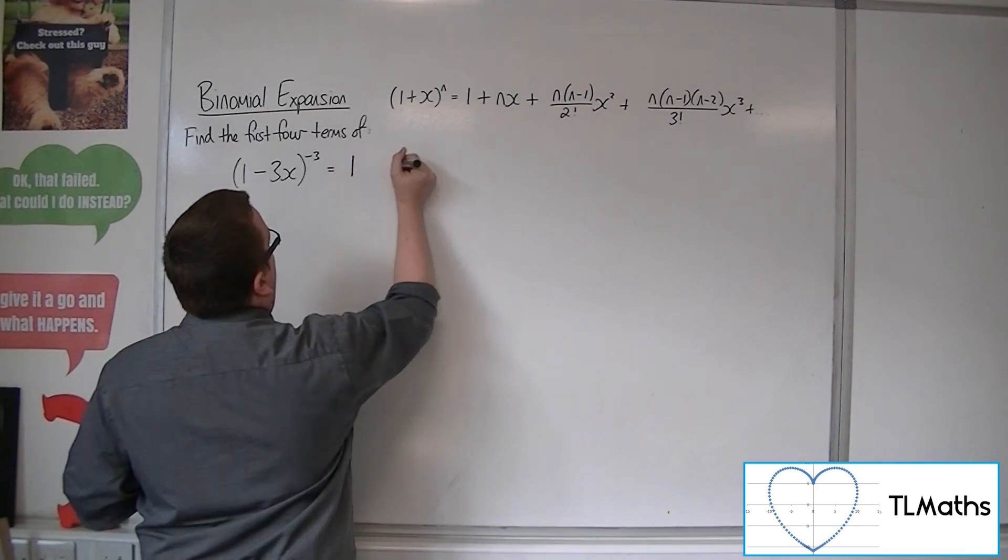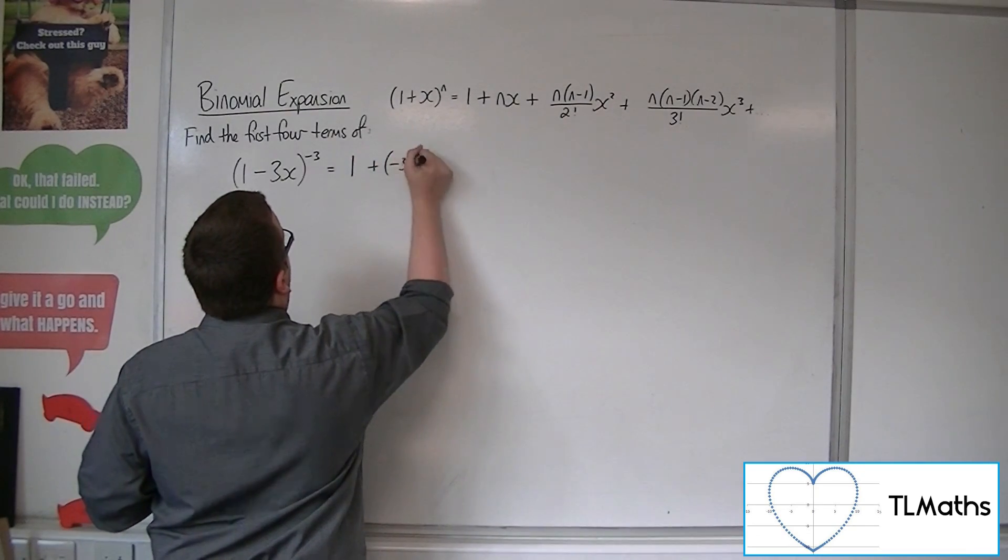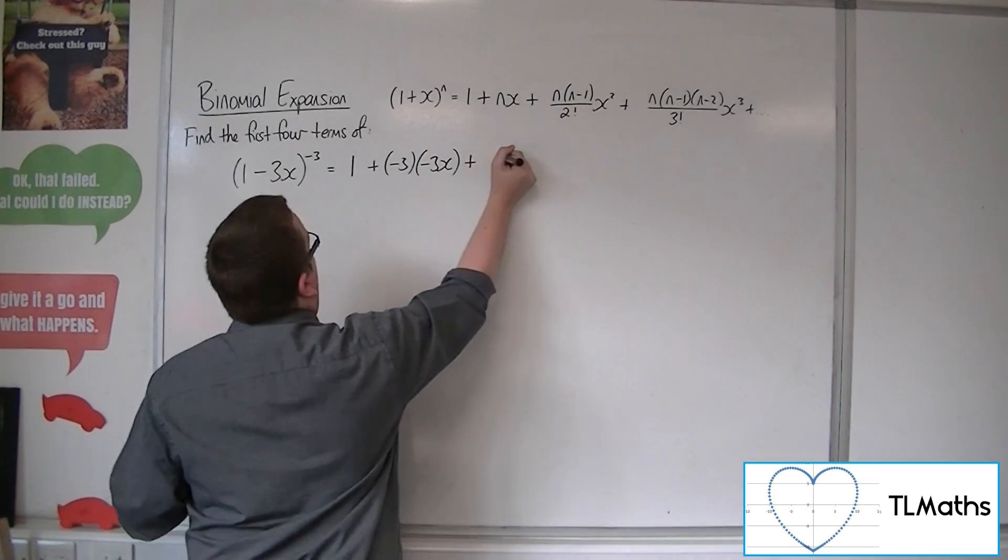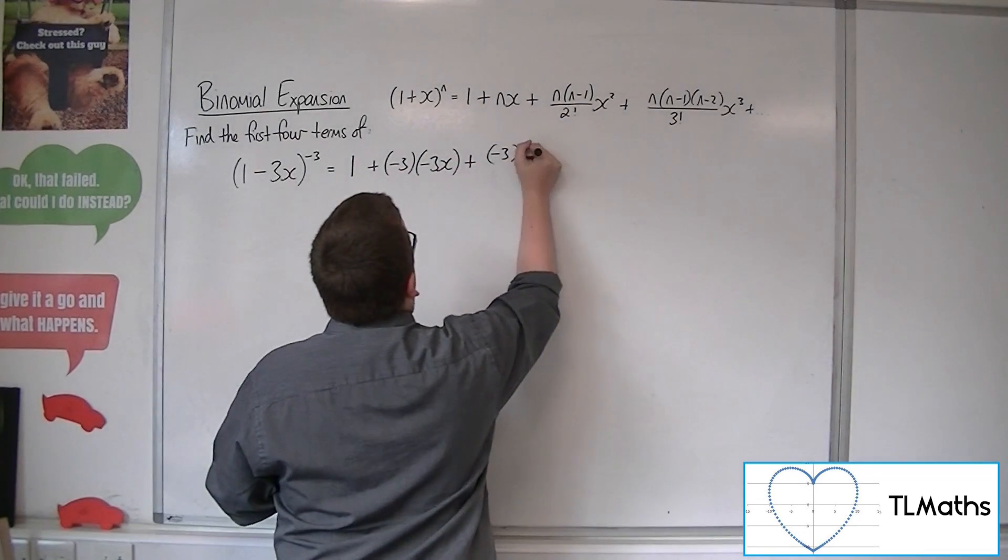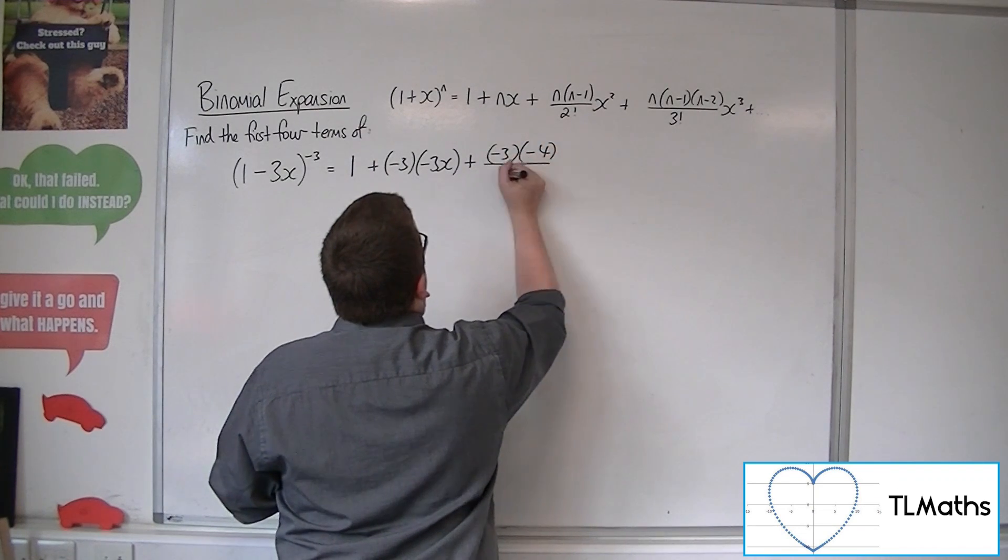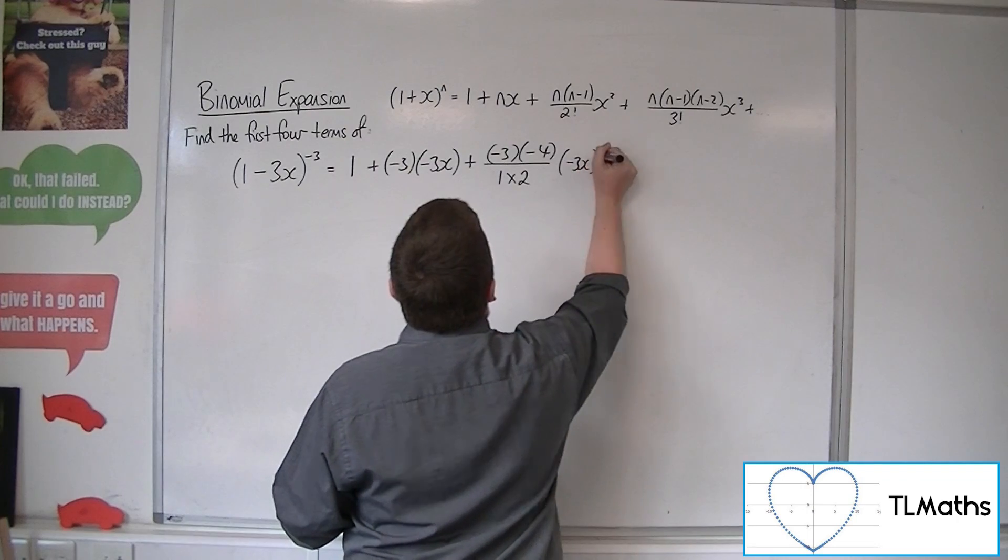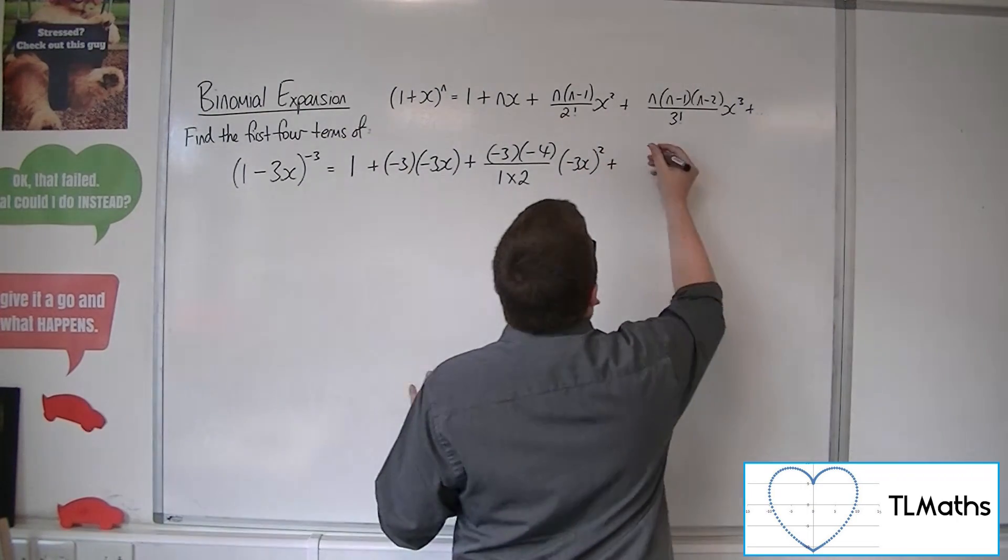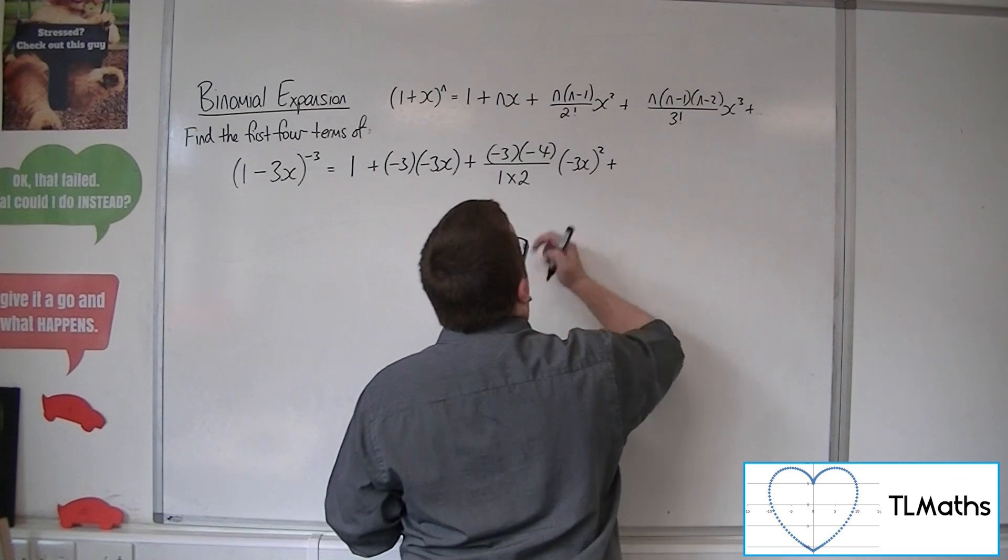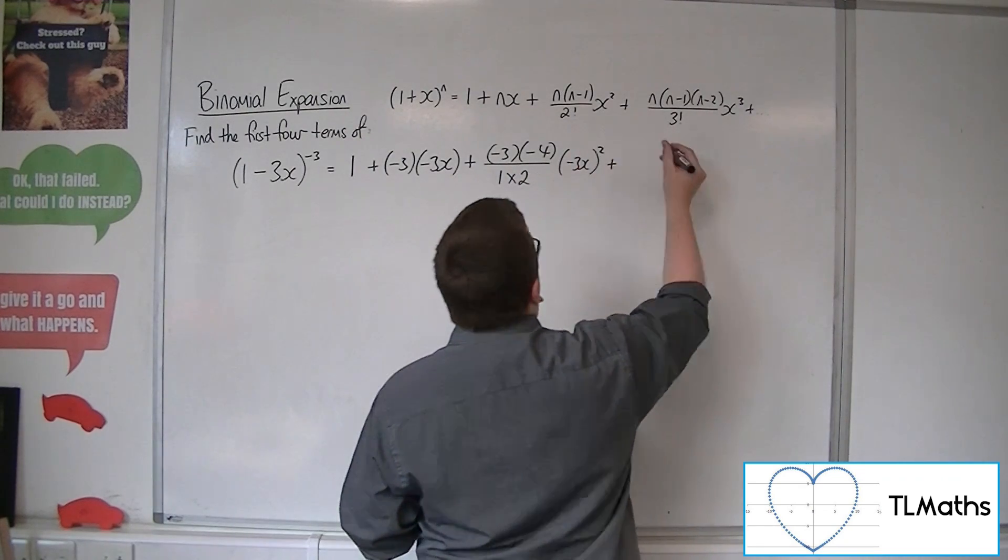So we have 1 plus minus 3 times minus 3x plus minus 3 times minus 4 over 1 times 2. And we're going to have minus 3x squared. Make sure it's going in a bracket. We've got to make sure that we're squaring both the 3 and the minus sign that's there.